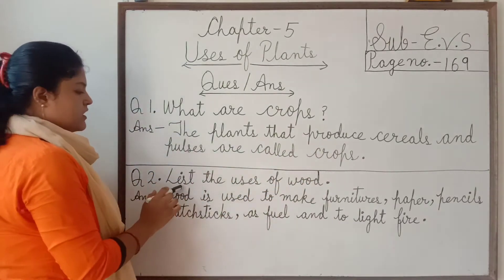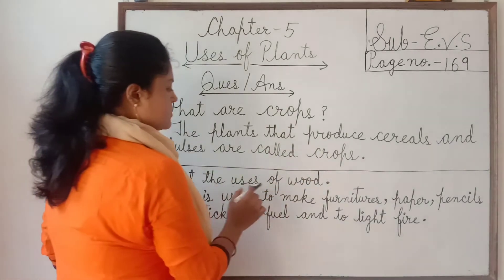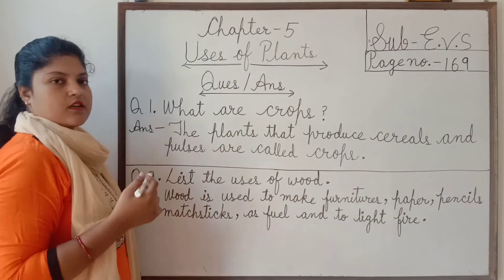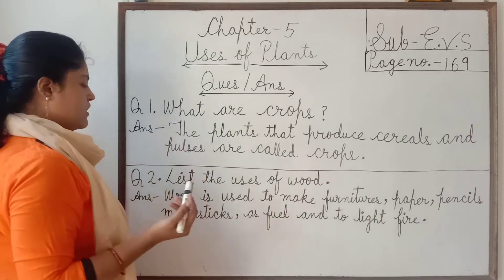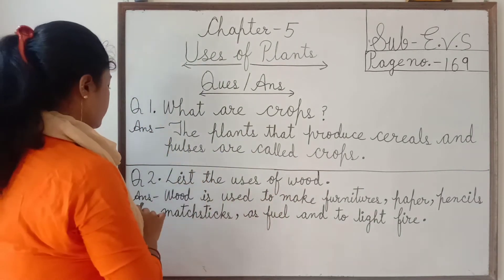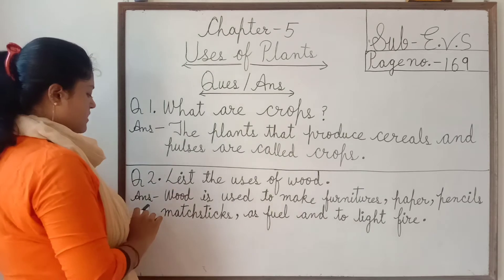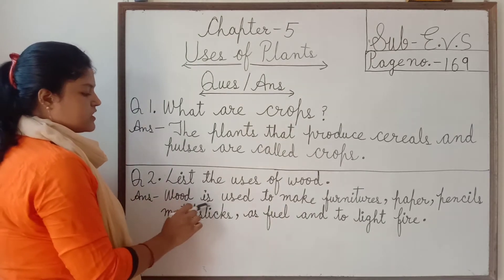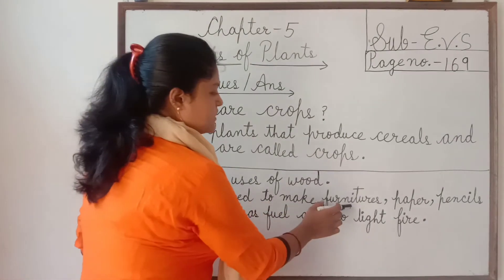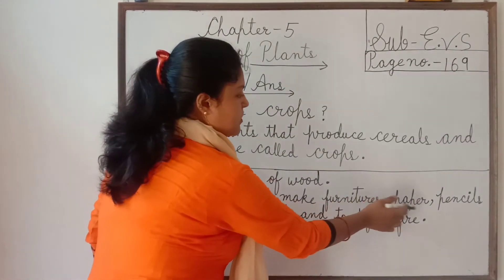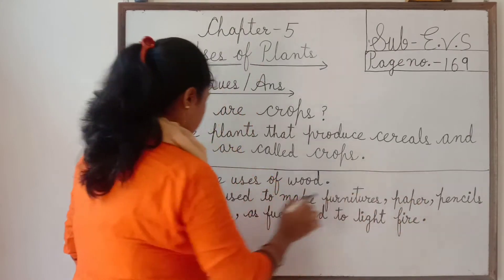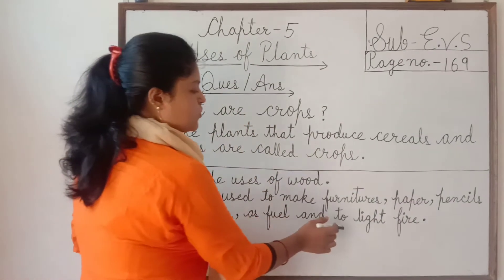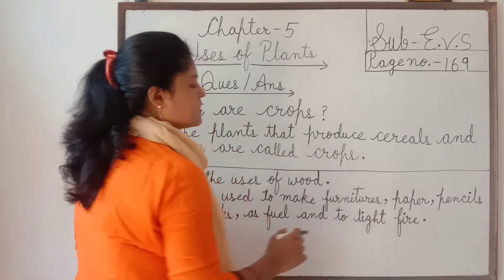Question number 2: List the uses of wood. Students, wood ke kya kya use hotay hain? The answer is: wood is used to make furniture, paper, pencils, matchsticks, as fuel, and to light fire.